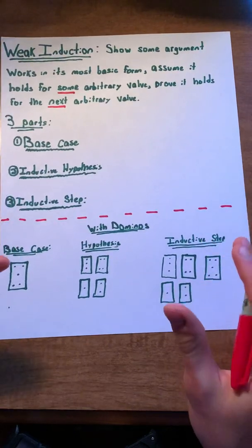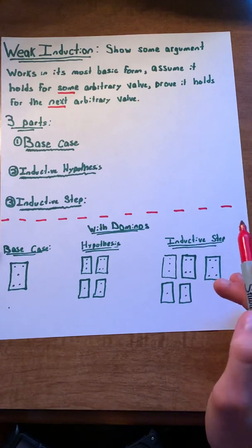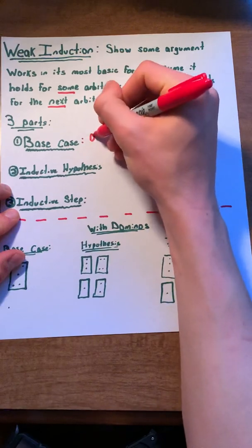To make this definition a little more simple, we can break it into three parts. The first part is our base case. This is where we prove the most basic form.